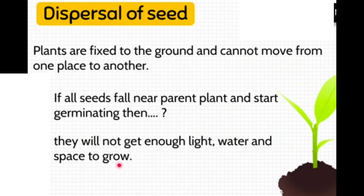Now we will learn about dispersal of seeds. The scattering of seeds away from the mother plant is called dispersal of seeds. Plants are fixed to the ground and cannot move from one place to another. If all seeds fall near the parent plant and start germination, they will not get enough light, water and space to grow.